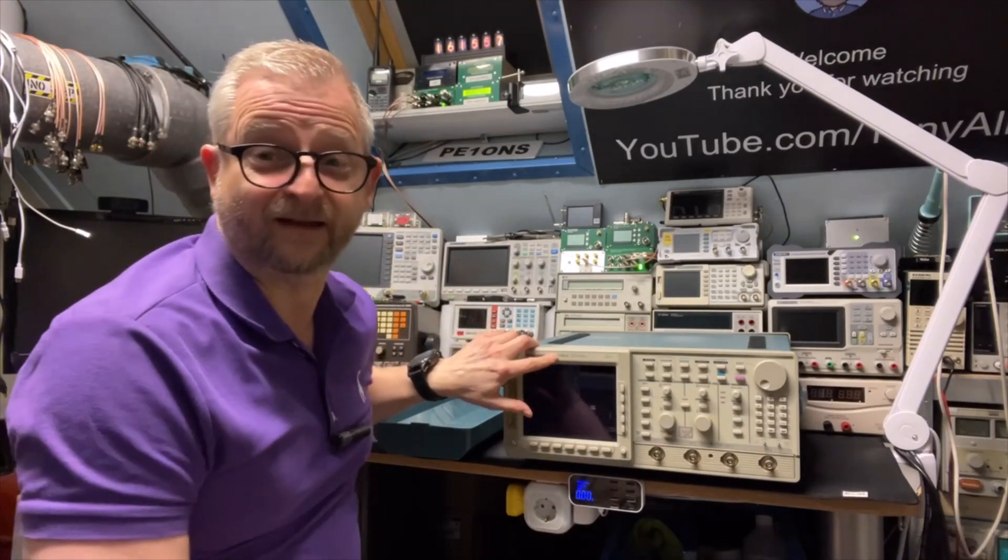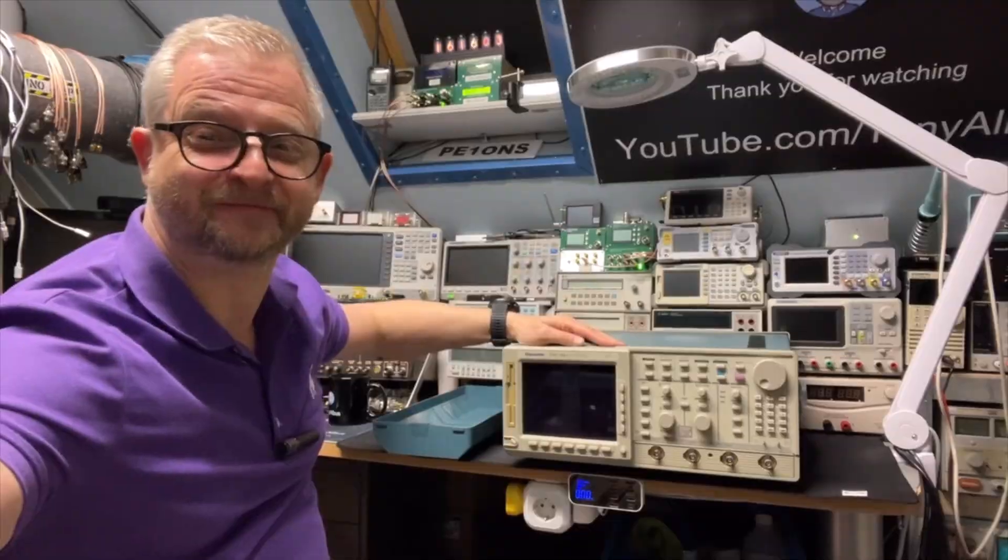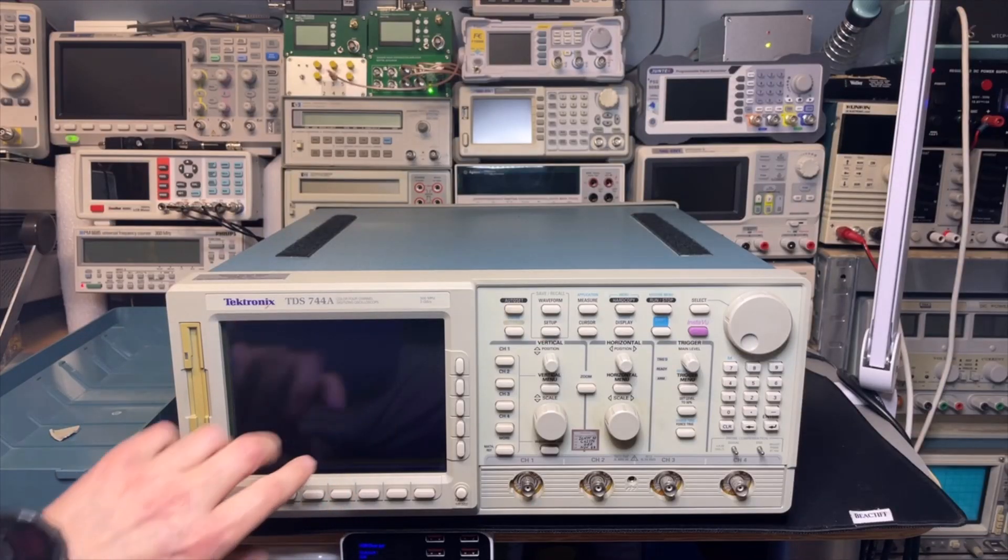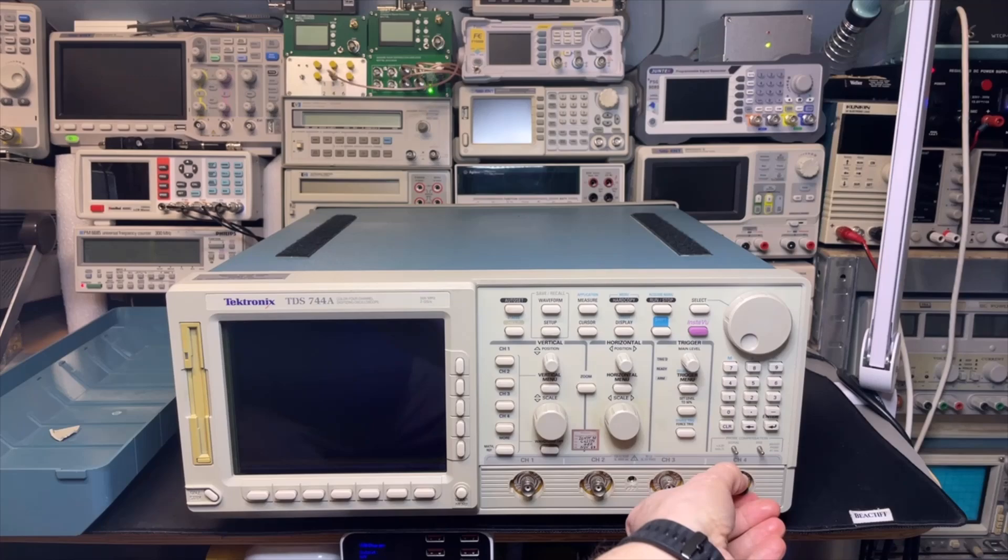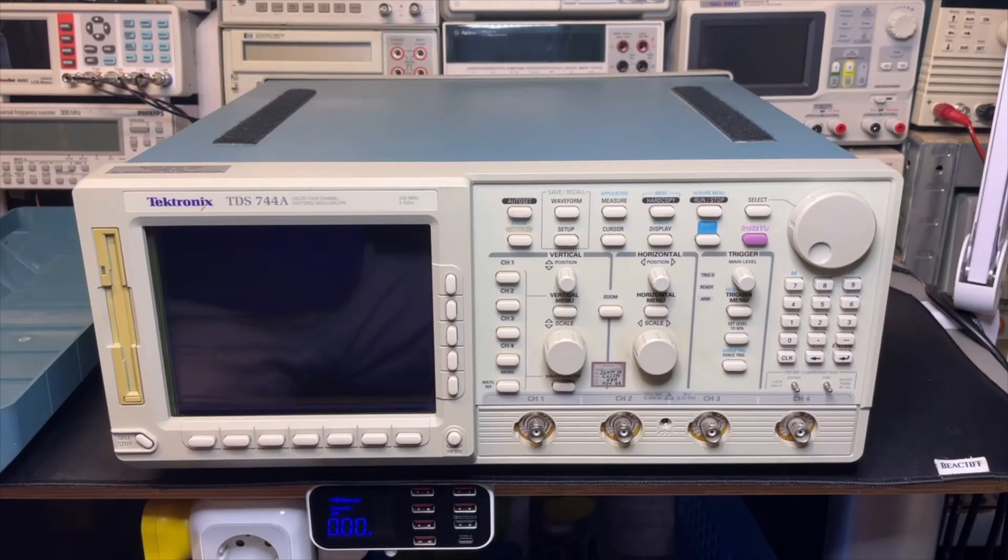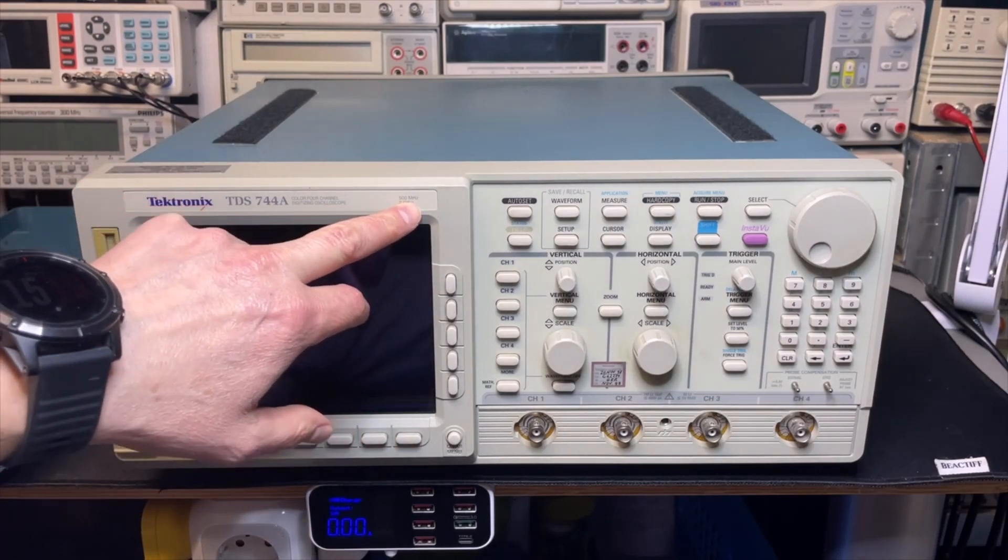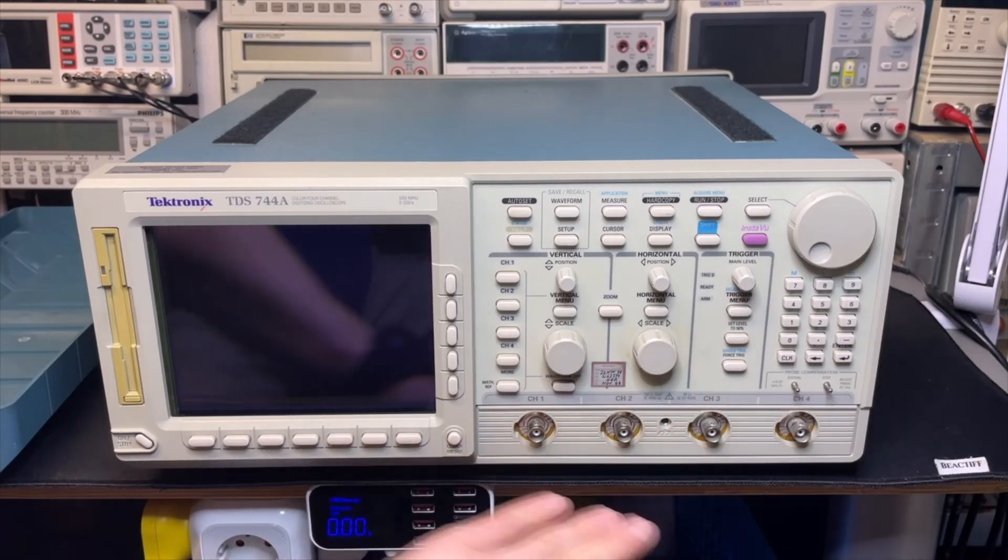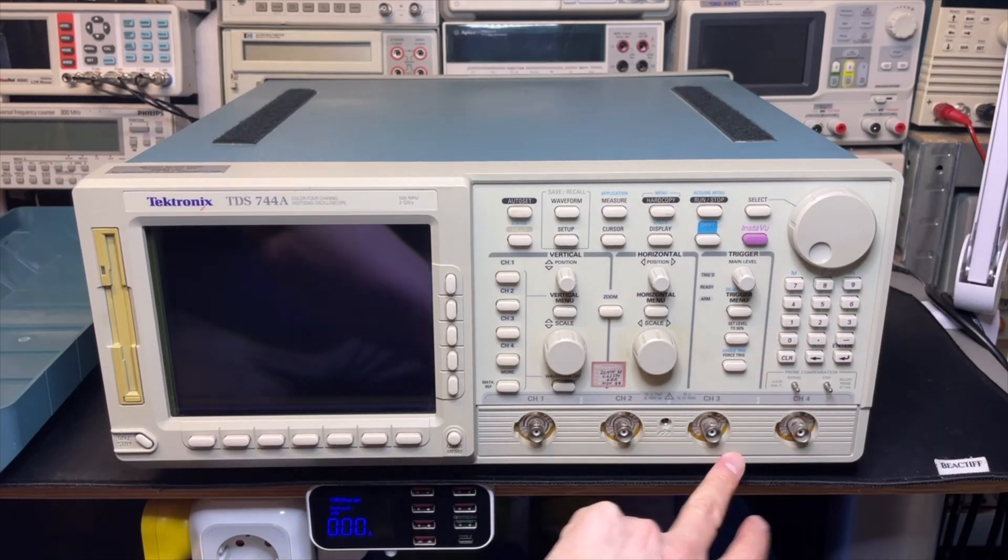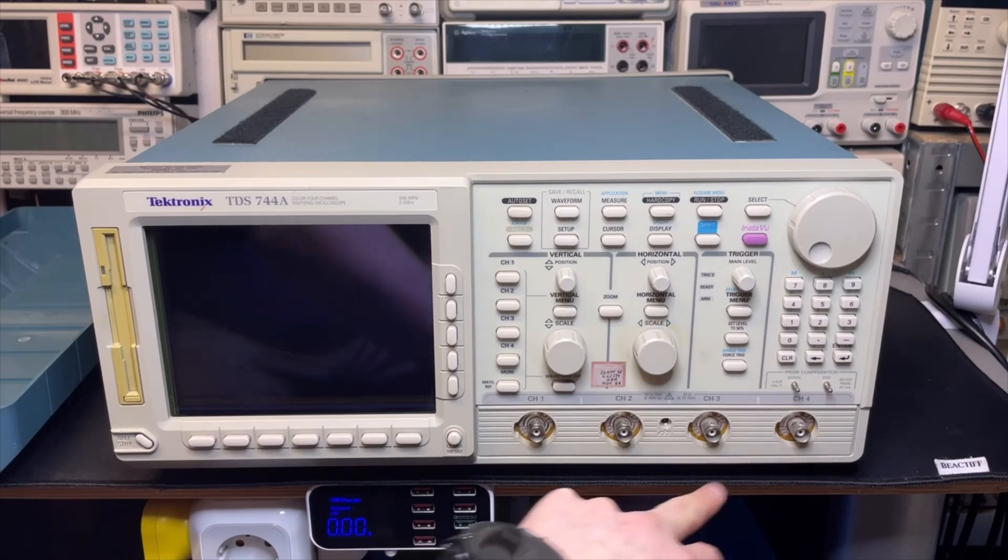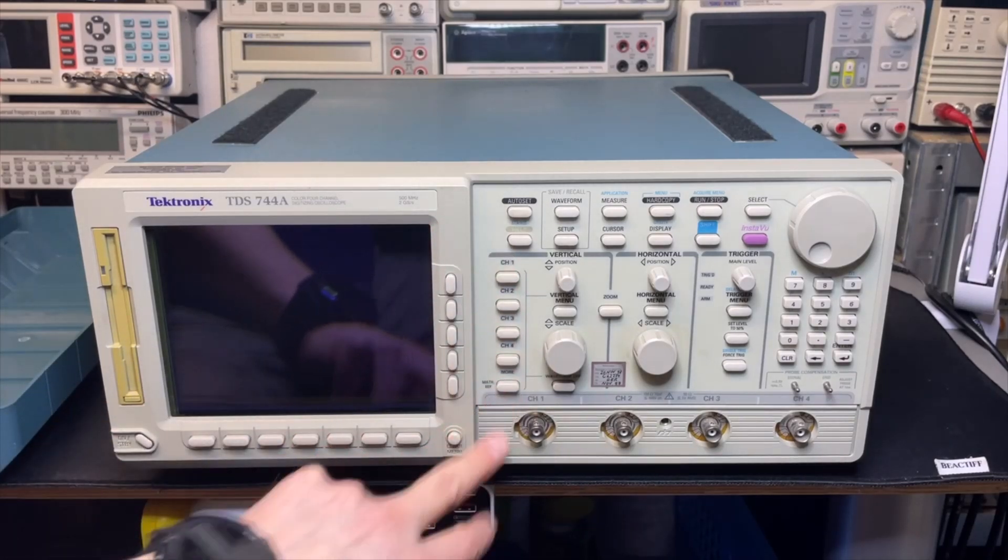It is the TDS 744A, a four-channel 500 megahertz oscilloscope with a classic CRT screen. It's about 25 years old, but even at that age, it's still up to 500 megahertz with two gigasamples per second. This is really the four-channel version because the two-channel version has connections here but says AUX1 and AUX2, and those channels cannot be used at the same time. Here you can really use all four.